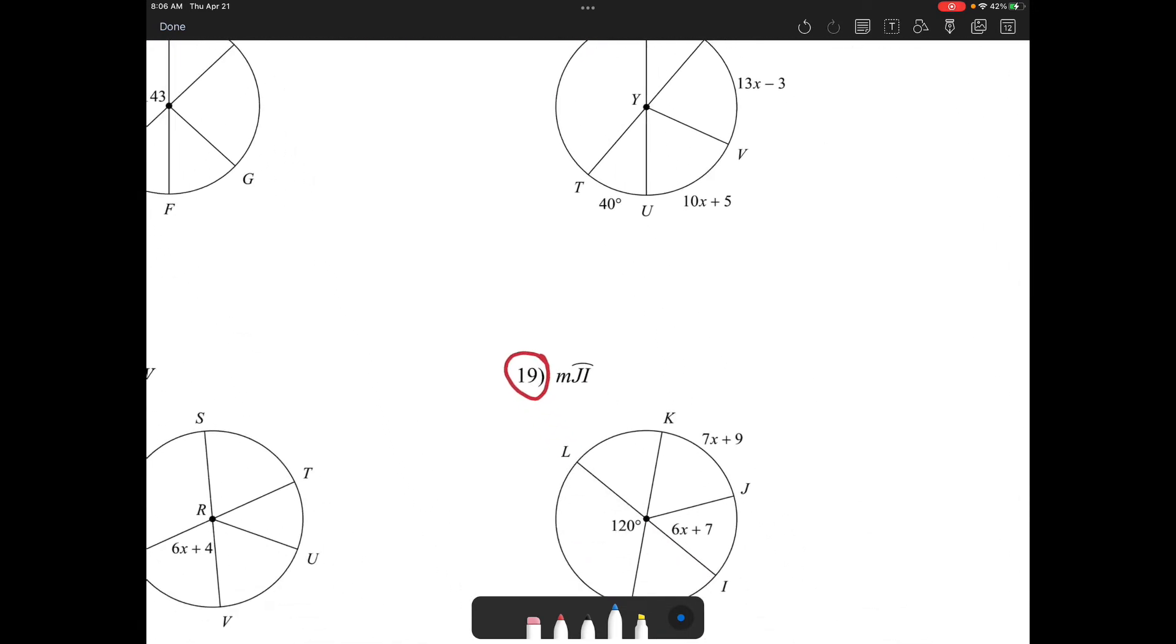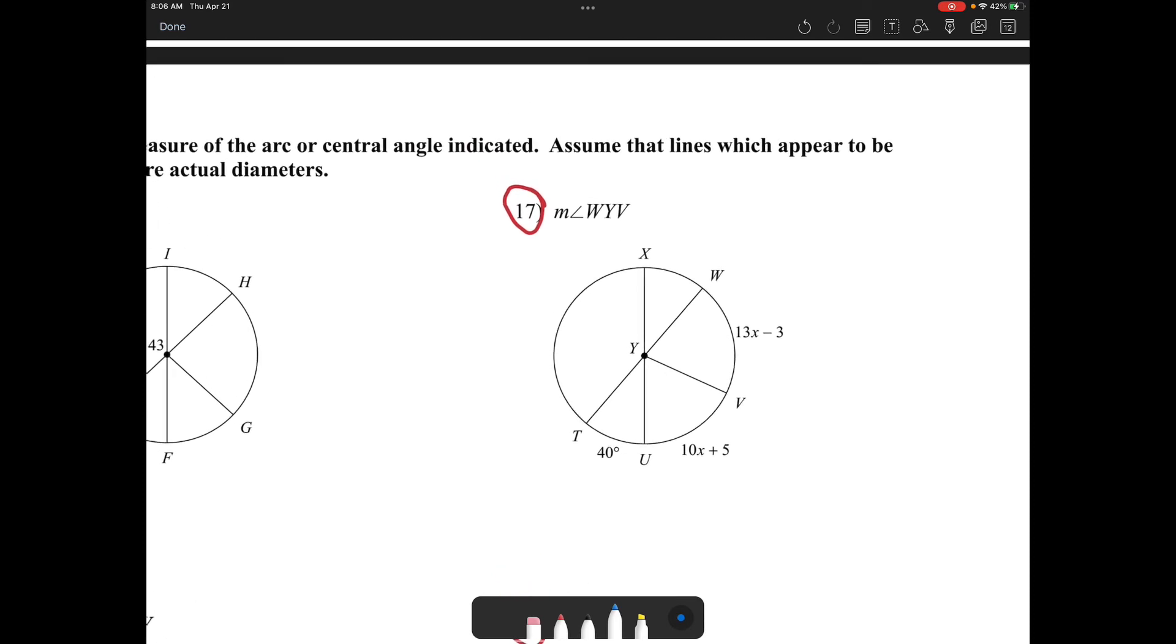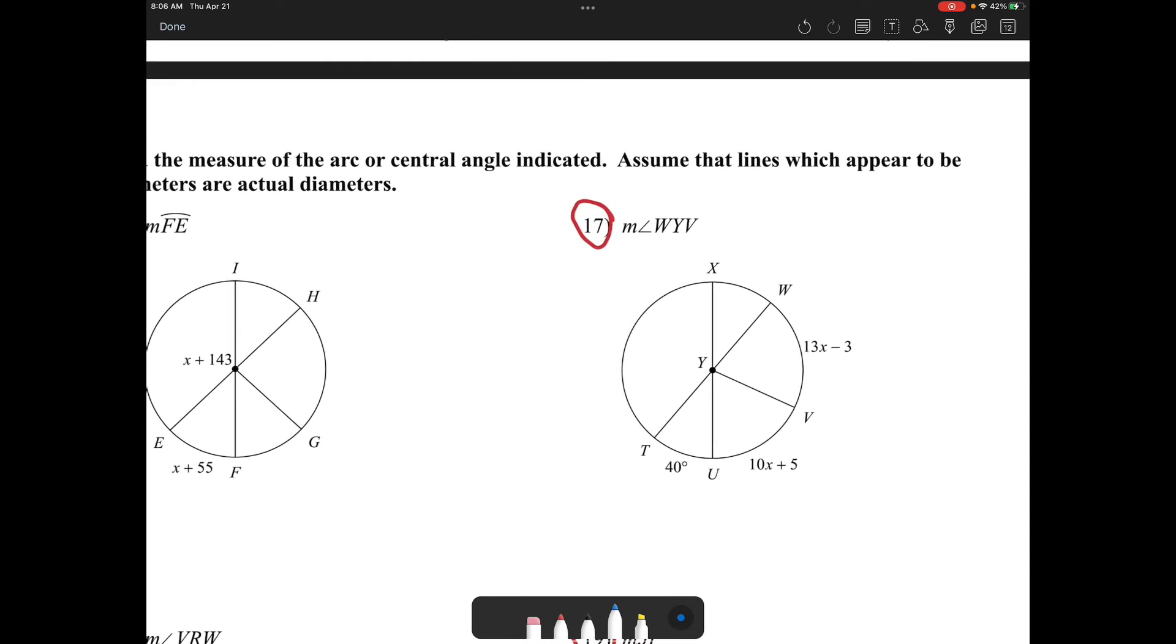I did want to do 17 because it's asking for something different. It's actually asking for the angle measurement, not for X. So how do I find this angle measurement? Well, again, this is a diameter, so as I go all the way around this has to equal 180. So my equation would be 13X minus 3 plus 10X plus 5 plus 40, all of this has to equal 180.